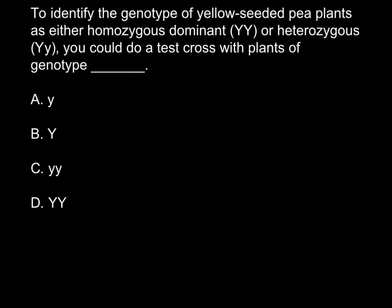Today I have a problem about test crosses — how we can use the technique of the test cross to identify if we have a homozygous dominant plant or a heterozygous plant that looks dominant but is genetically different. Here's the question: to identify the genotype of yellow-seeded pea plants as homozygous dominant or heterozygous, you could do a test cross with a plant of what genotype? You may pause the video here, choose your answer, then resume to compare with my answer.